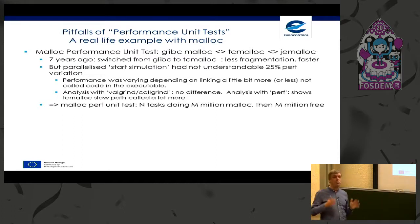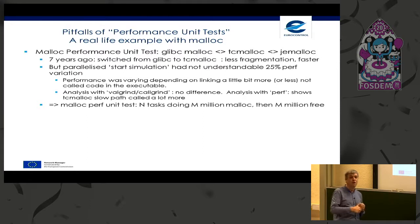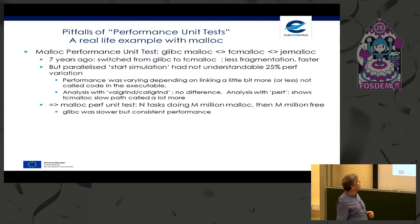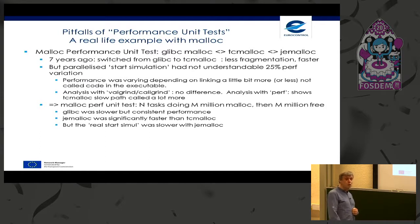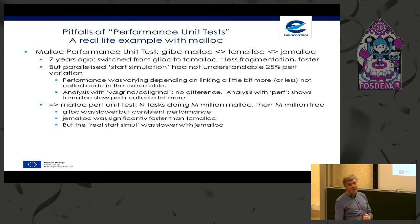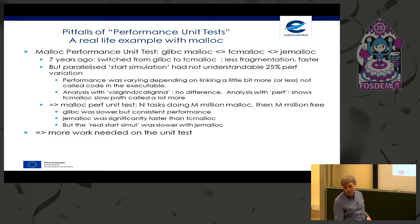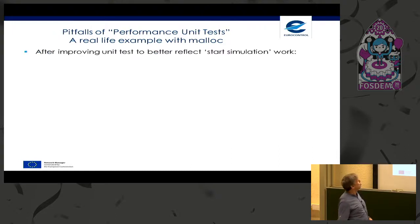We said 'that's easy — we'll remeasure the malloc library.' We created a performance unit test with tasks simulating an indexer task doing a million mallocs and then a million frees. We saw that glibc was slower but had consistent performance. JE malloc was significantly faster than TC malloc in this unit test — we were really happy. But when we used JE malloc with the real code, the actual start simulation with the complete system was slower with JE malloc.